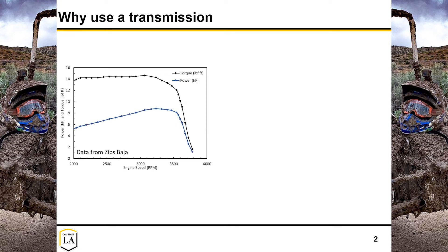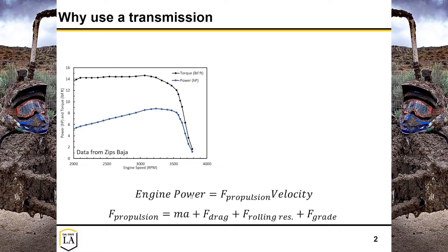First, a little bit about why do we even use a transmission? This is data from the Briggs & Stratton engine with a relatively flat torque curve. It has a peak in engine power around 3200 to 3500 RPM. Typically when you design your powertrain, you want your engine to be at its max power at all times, because for any fixed velocity, the amount of force you can use to propel yourself forward is related to that power. That force can be used to help you accelerate, overcome drag, rolling resistance, or go up a hill.